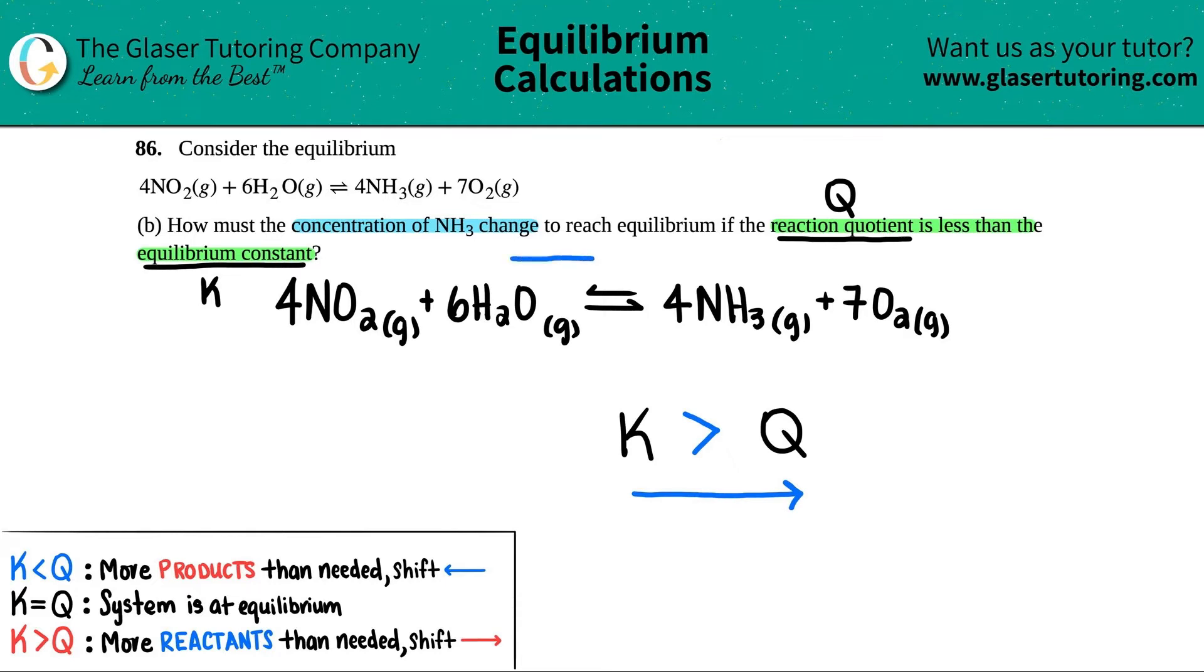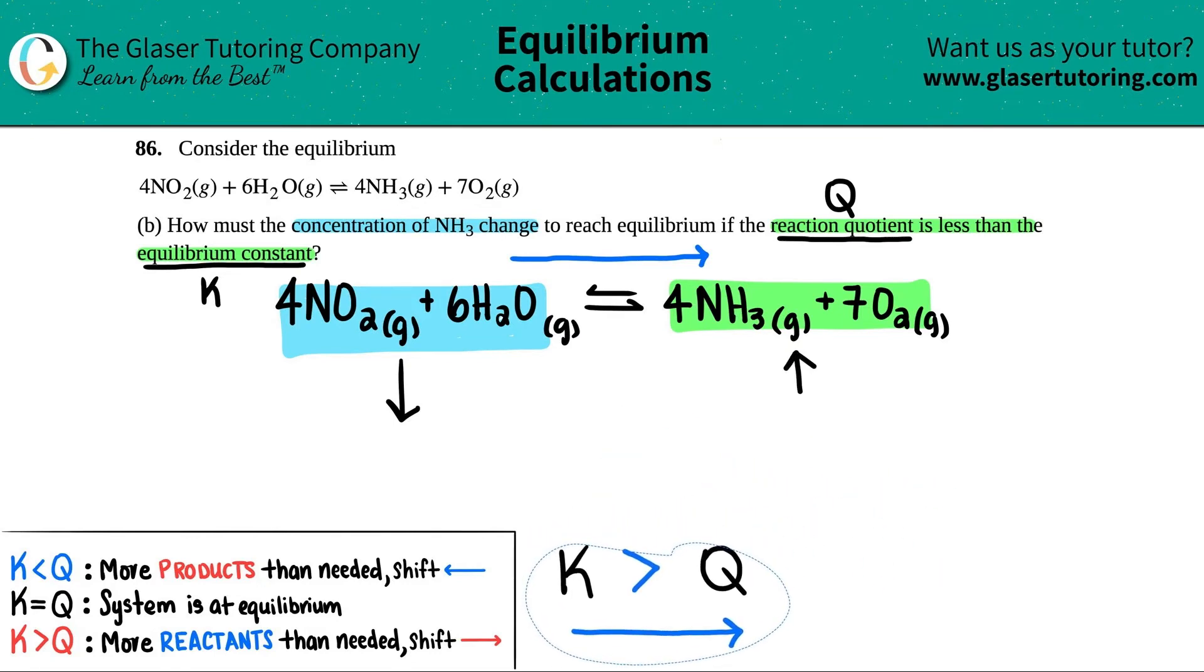So if the general direction in which the reaction quotient is less than the K value, the equilibrium constant, we know that the reactants, all of the reactants are going to decrease. So this whole side is going to drop and this whole side is going to increase. So that's what a forward reaction is.